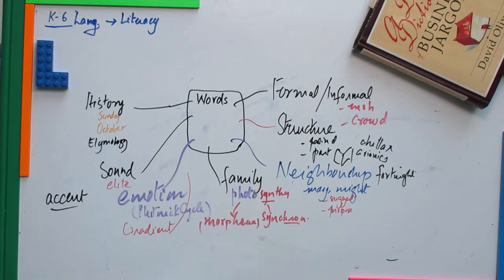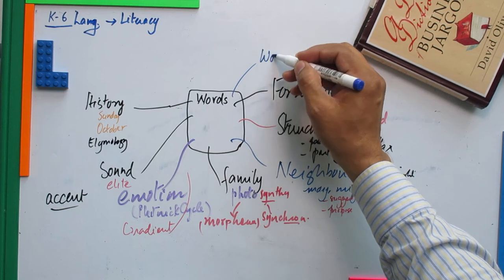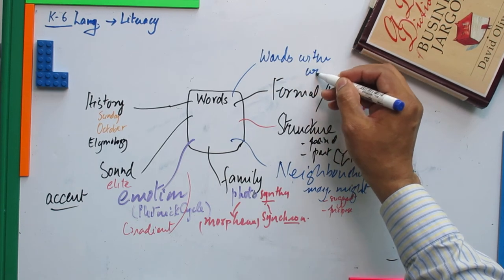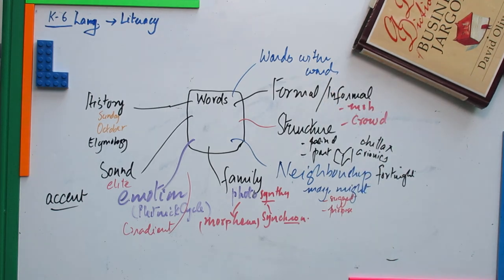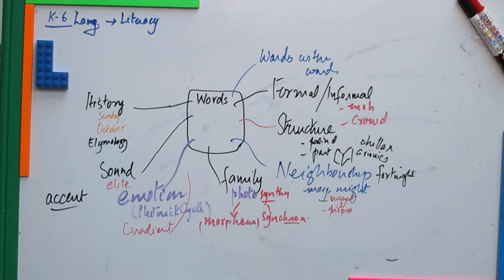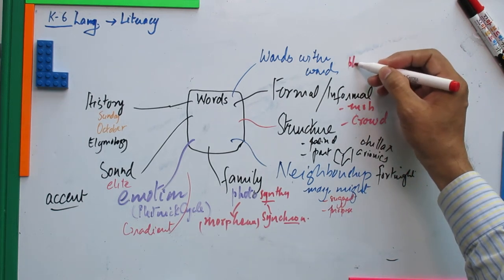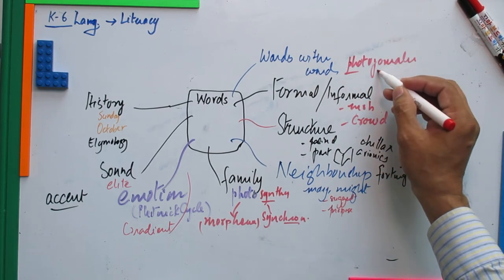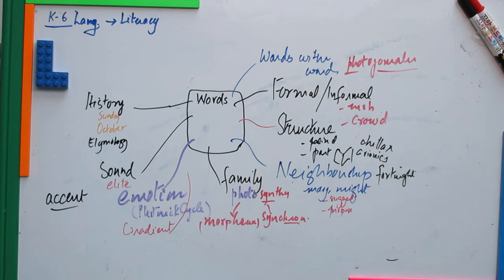Words have words within words. Like Bluetooth or photojournalism - what is photo, what is journalism, what is journal, what does journal have to do with diary? Lots of knowledge comes from different sources.